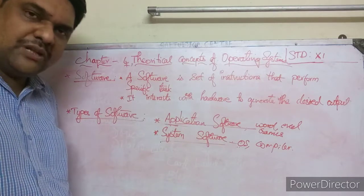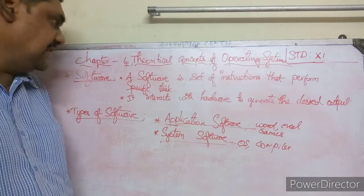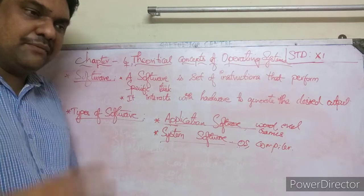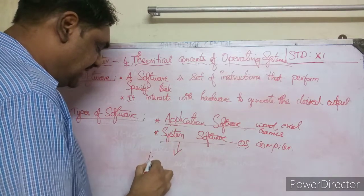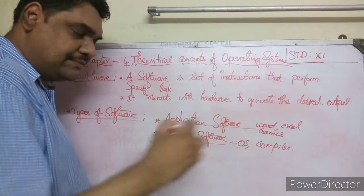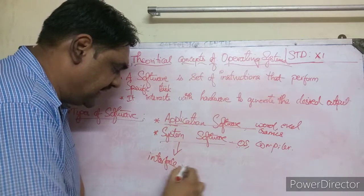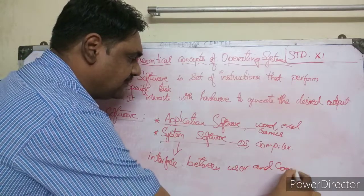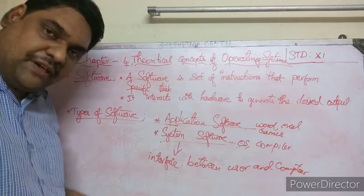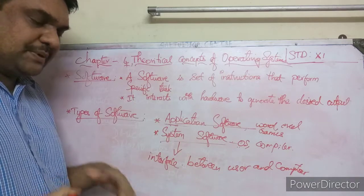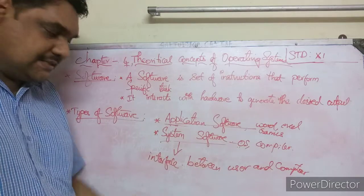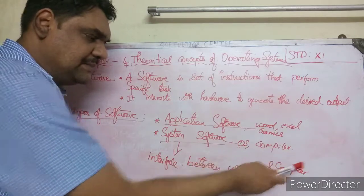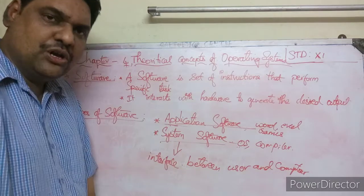So this is about the types of software. Now let us see the uses of operating system. The operating system is a type of system software which makes the system work and acts as an interface — meaning a middleman — between the user and the computer. Examples of system software include OS and compiler. The OS is the operating system; the compiler converts high-level language to binary language.